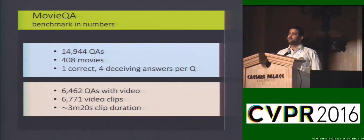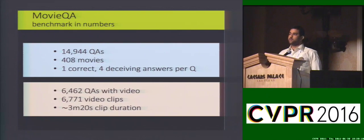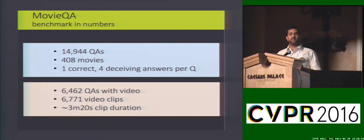The dataset consists of 15,000 quizzes obtained from over 400 movies. Each quiz is associated with five multiple choice options, only one of which is correct. The four wrong options are obtained by human annotators who are familiar with the story, thus providing deceiving answers. Almost half of the questions can also be answered using video clips, which are around 200 seconds on average, allowing for long-range temporal reasoning.